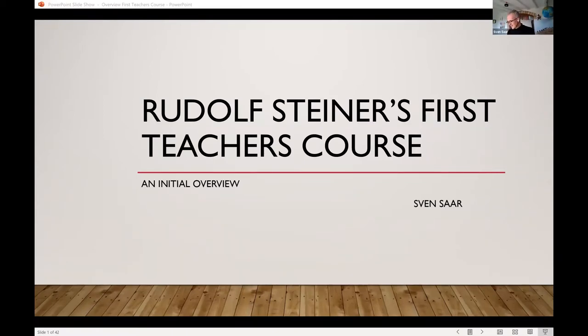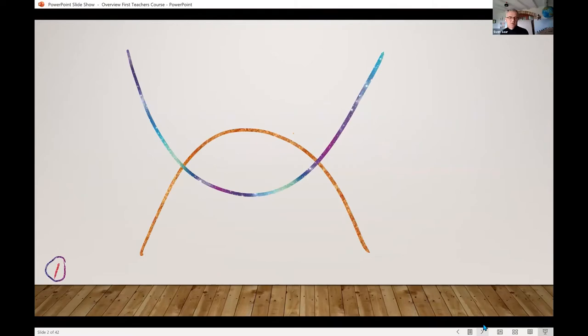To begin with, in the first lecture, Steiner talks about the duality of the human being. I think I've shown you this diagram in the very first lecture I gave on Prelude. This diagram represents our twofold nature. Part of us is generically determined, predisposed.